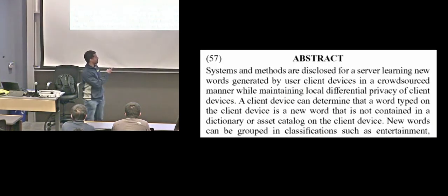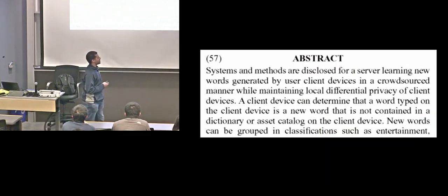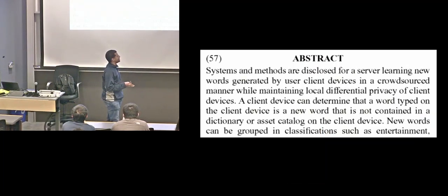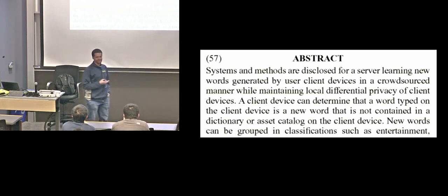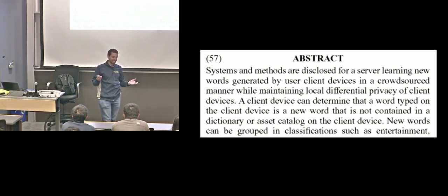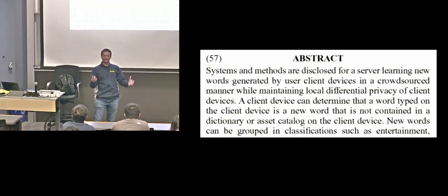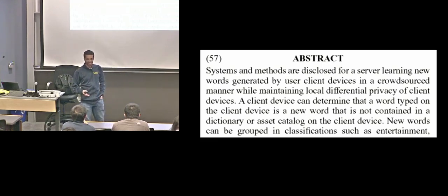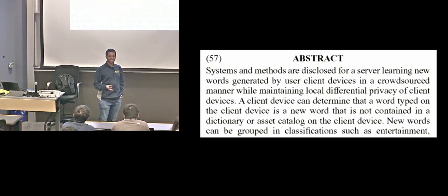Bottom line is they need to learn from our data. Let me zoom in on the part boxed in the bottom right: 'Systems and methods are disclosed for a server learning new words. The server is them, generated by user client devices — that's our iPhones — in a crowd-sourced manner.' So you might ask: does this mean they're reading our texts to train their ML models for better autocomplete and spell correction? That is roughly what it means.